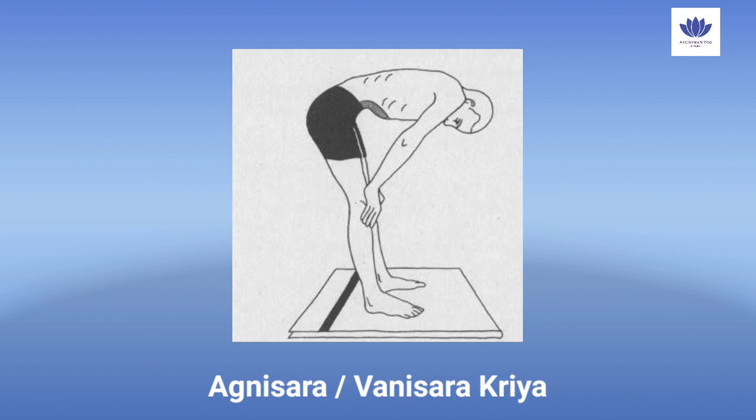The third type under antar dhoti is vanisar — 'vani' means fire — cleansing with the element fire, also known as agnisar kriya. The process involves standing with feet shoulder-width apart, inhaling, exhaling, bending forward, holding the breath in bahya kumbhaka, and trying to touch the navel to the spine a hundred times. Beginners can start with 20–30 counts. There is also a variation done in a sitting position.